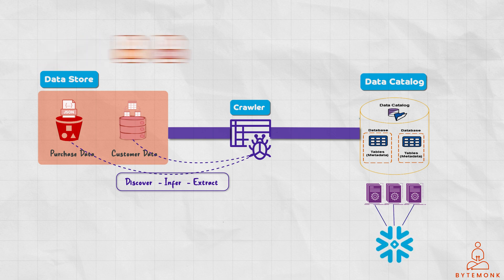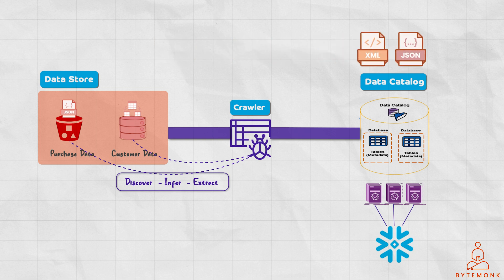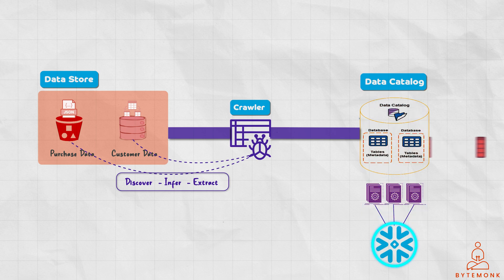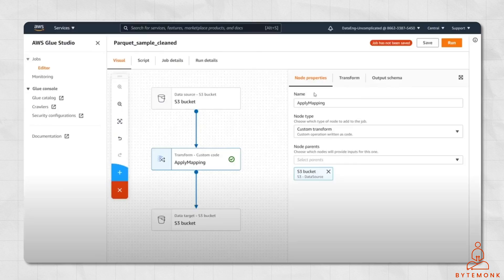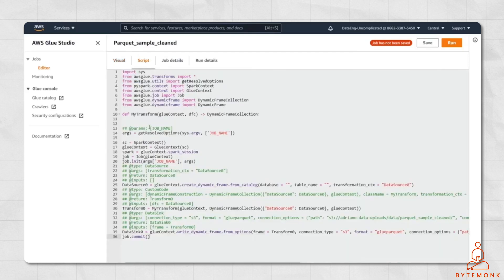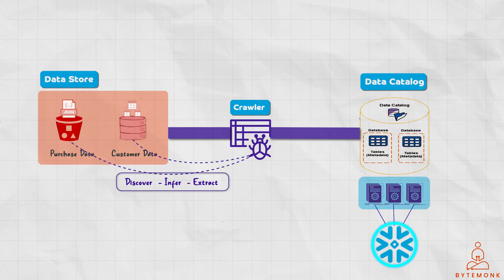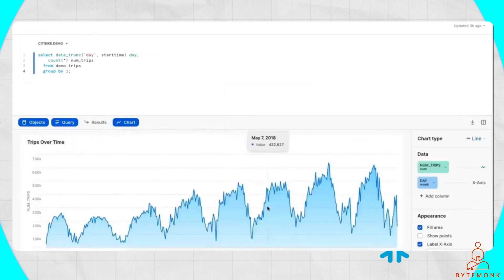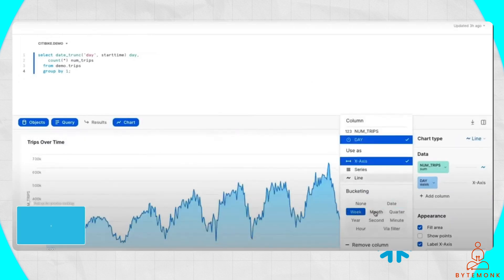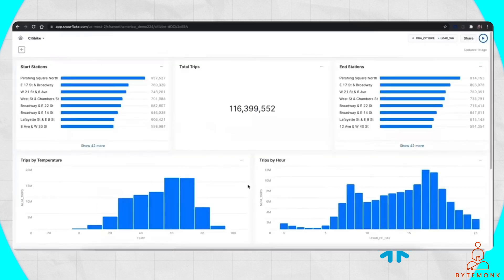Glue can also flatten all semi-structured data no matter how complex it is. It can also transform the input into target data types and throw away unneeded columns. Glue scripts are very forgiving and can adapt to changes in the structure of the input and output data. You can further customize Glue scripts using an intuitive graph-based user interface in the console, or you can edit the scripts directly yourself. And once your data is loaded into Snowflake, you can use its powerful analytics capabilities to analyze your customer purchase data and gain insights that can help you improve your business.